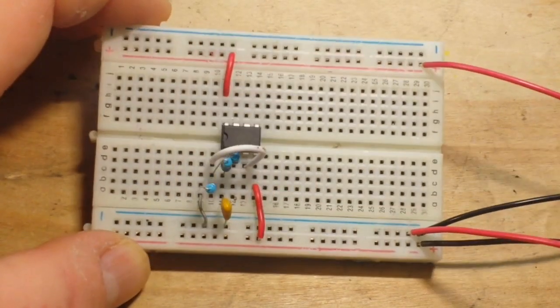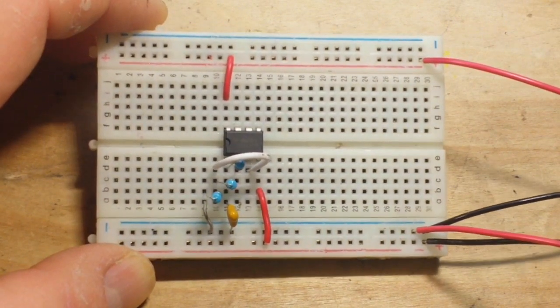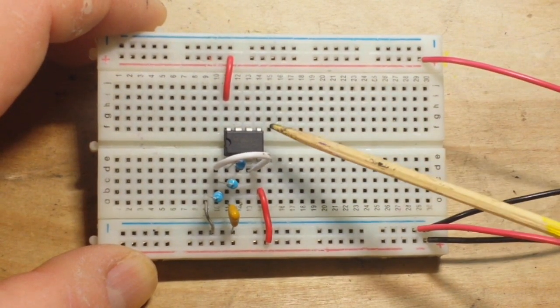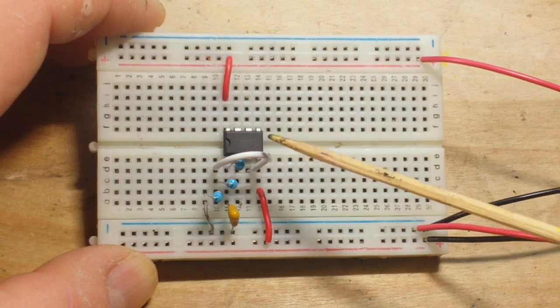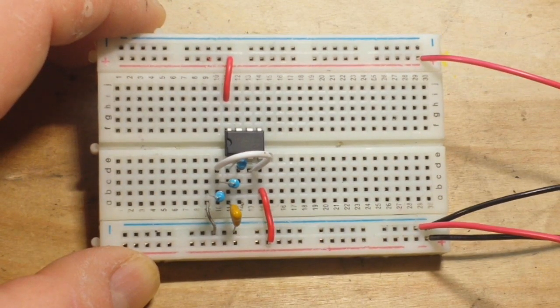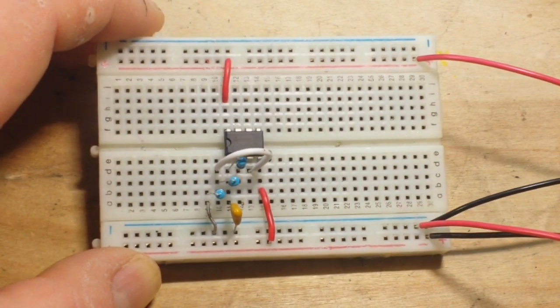What we've got here is an op-amp. In this case, I'm using a TL072, which is a dual op-amp. I'm only using one side of it. This will work just as well with an LM741. Just can't find any this morning.